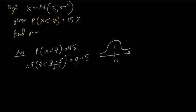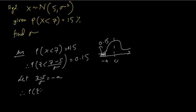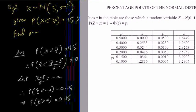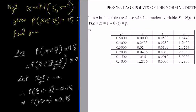It's a very good idea to draw this — it helps a lot. Less than means on the left-hand side, and the area is 15%. Since 15% is less than 50%, it will be around the negative side. So let (7 minus 5) divided by σ equal negative A. Therefore, probability of z less than negative A equals 0.15. By the law of symmetry, we reverse the inequality and make it positive. We can look up the percentage table for greater than. If the probability is 0.15, the value of z is 1.0364.